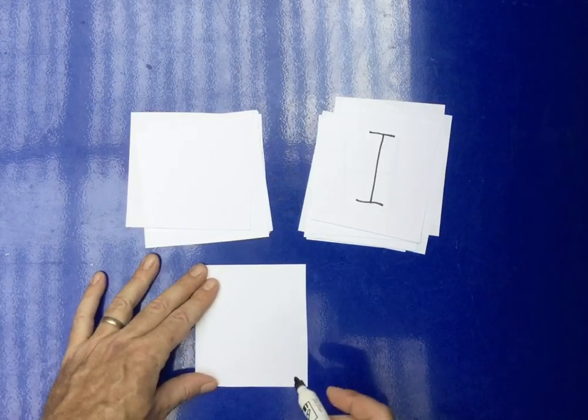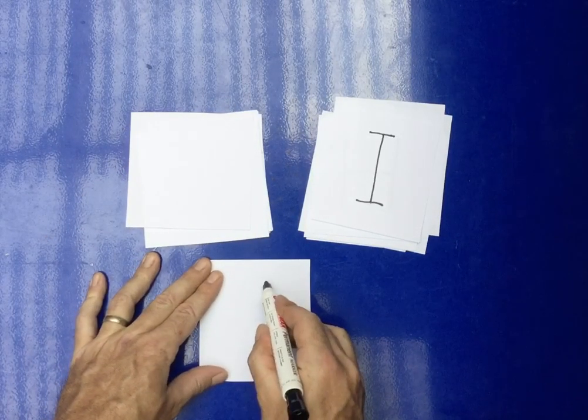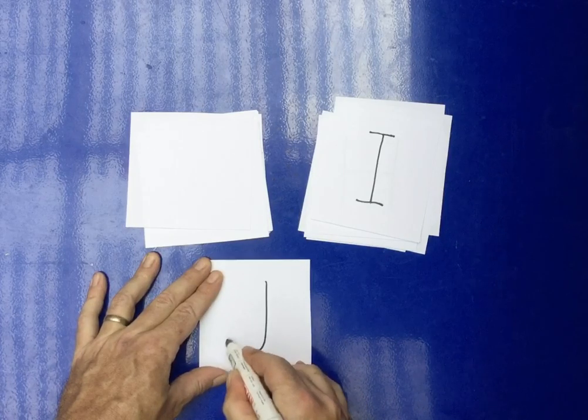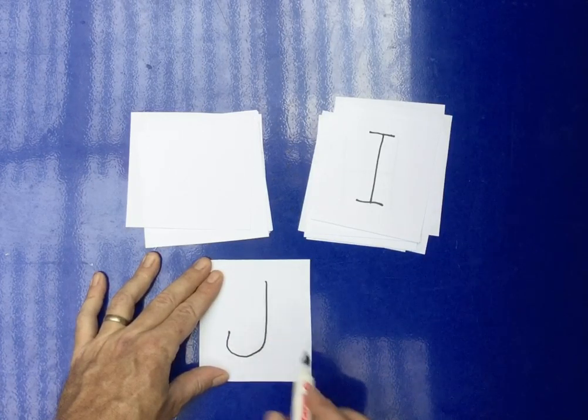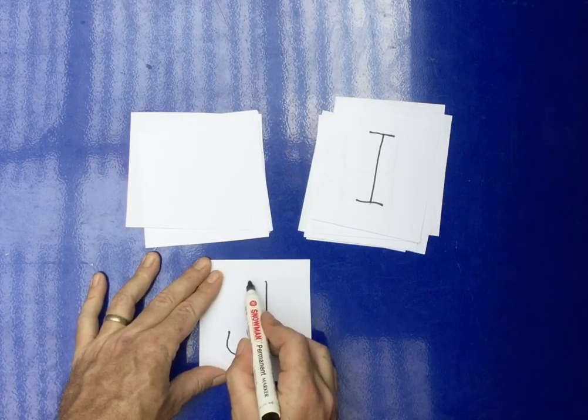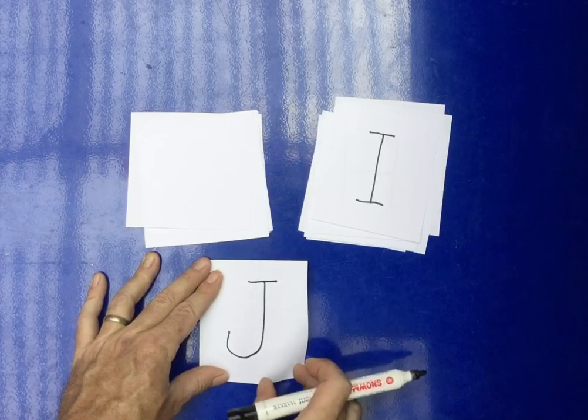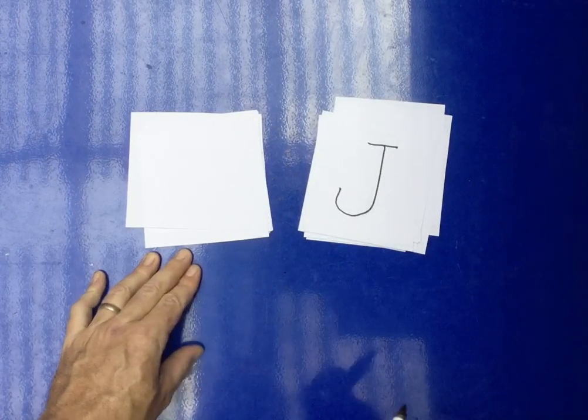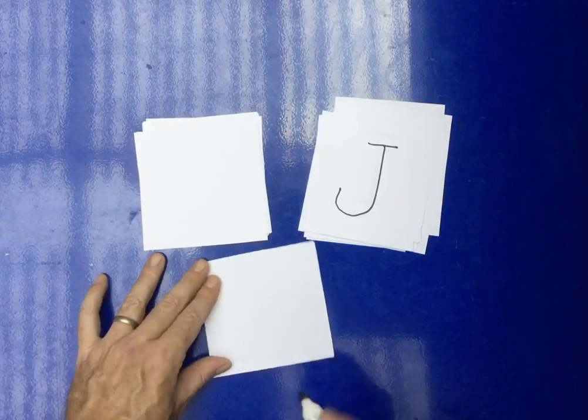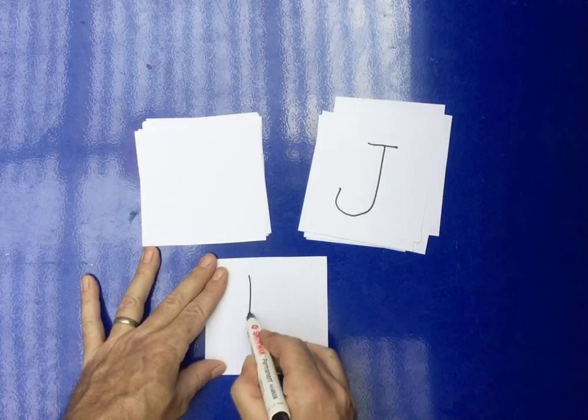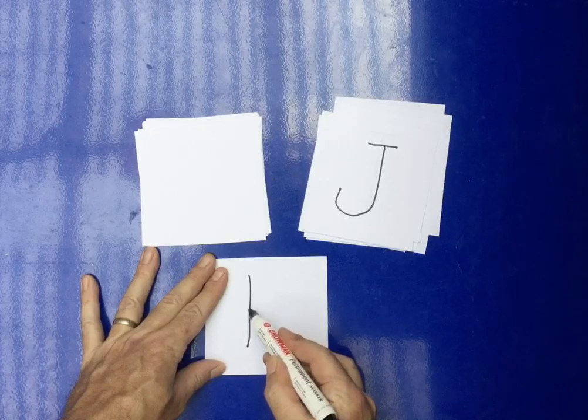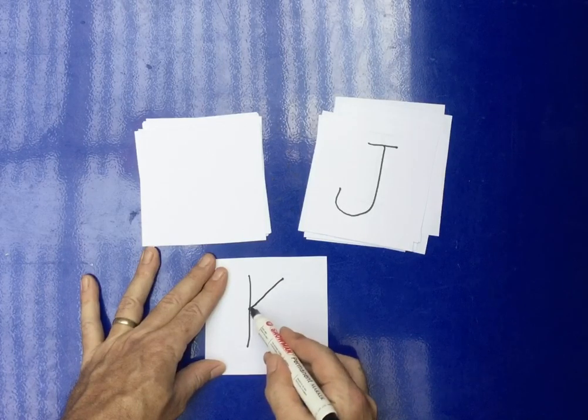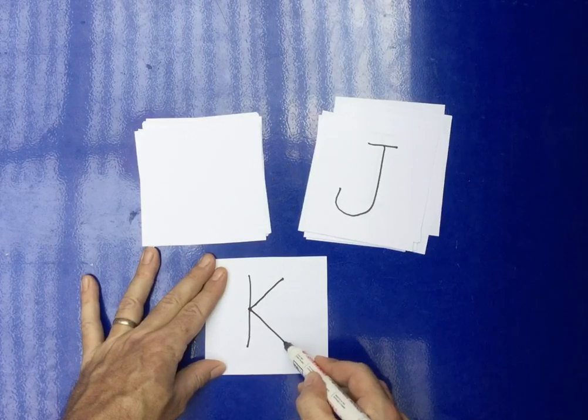H, I, J. So the J goes down, back like this. In French, you can leave it like this. In English, we can put a little hat on it. H, I, J, K. So the K, we go down. We go back to the middle, we go up, we go back to the middle, we go down.